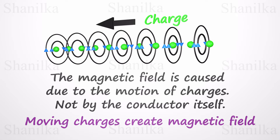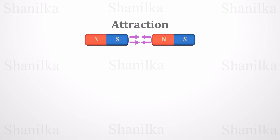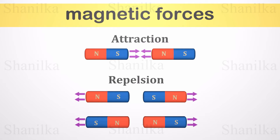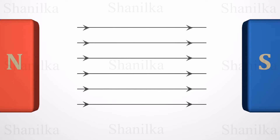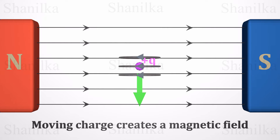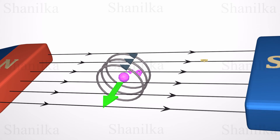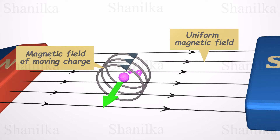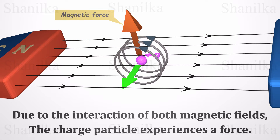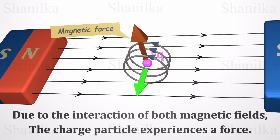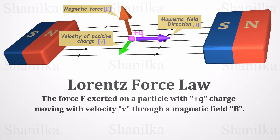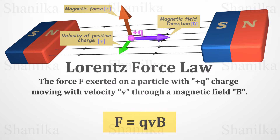Now we have the basic idea of magnetism and electromagnetism. The attraction or repulsion between magnetic poles is called magnetic force. In a uniform magnetic field, a positive charge moving perpendicular to the field creates its own magnetic field, and these two fields interact. As a result, the charged particle experiences a magnetic force perpendicular to both fields, and we can observe the particle move. This force can be calculated using the Lorentz force law, where all vectors must be perpendicular to each other.